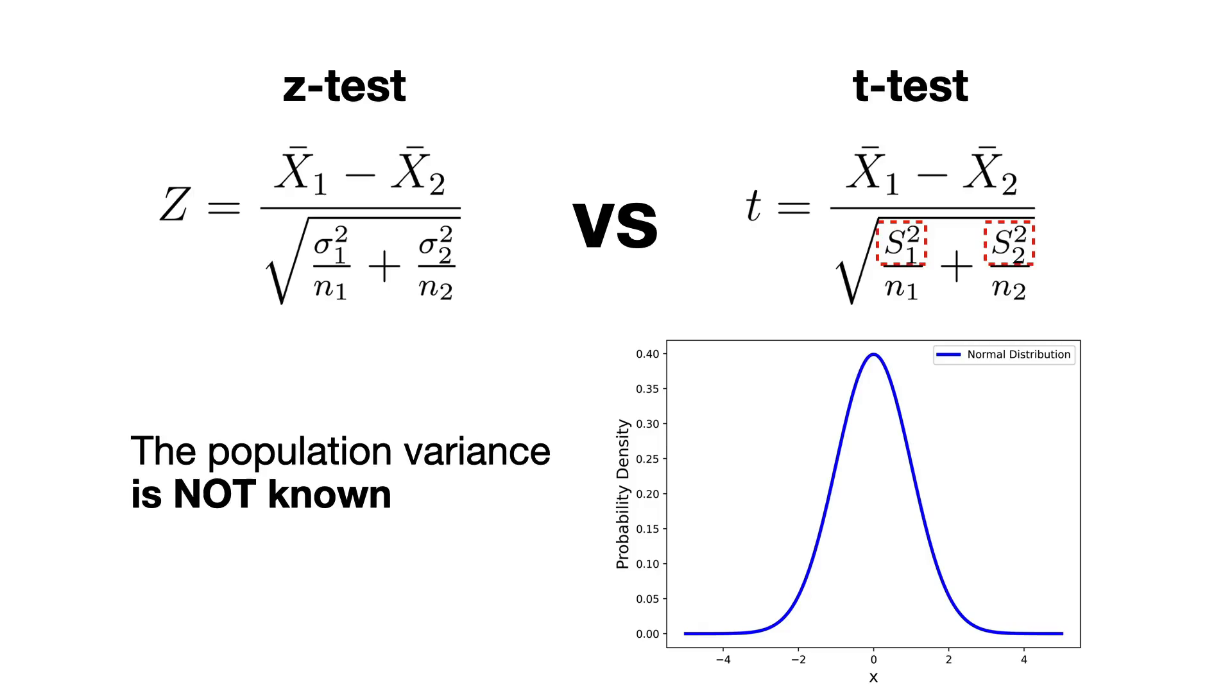A T-test, on the other hand, is what you use when you don't know the population variance, and you need to estimate it from your sample data. Estimating the variance means there's more uncertainty involved, and that's where the T-distribution comes in.